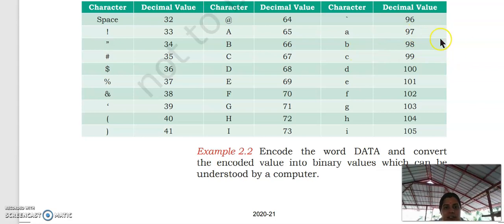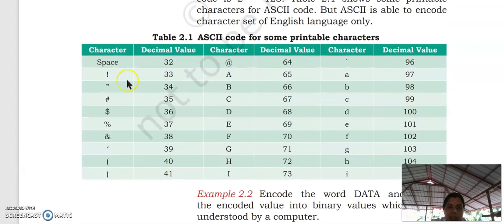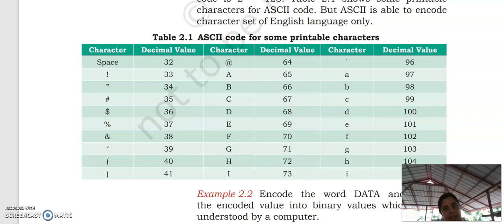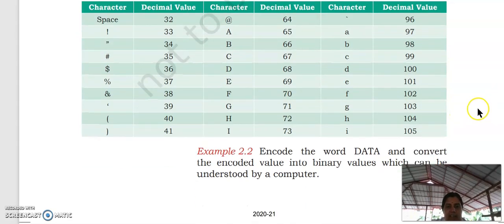Capital letters have smaller values, and some characters also have decimal values — for example, the hash key. Our keyboard characters will have these ASCII values. You have to study this ASCII code, at least for some characters. If you study capital A, then you can study capital B, capital C, and so on. The value of capital A is 65, and the value of small letter A is 97.